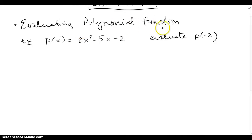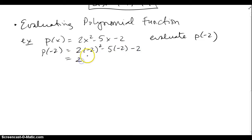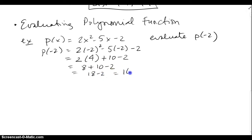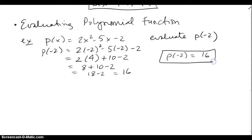Evaluating polynomial functions is just like evaluating any other function. To evaluate p of negative 2, simply replace x with negative 2 and see what it outputs. I replace all the x's with negative 2, apply order of operations: 2 times 4 is 8, plus 10 minus 2 gives 18 minus 2 which is 16. So p of negative 2 equals 16 — meaning the x-coordinate negative 2 has a corresponding y-coordinate of 16.